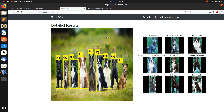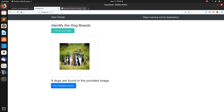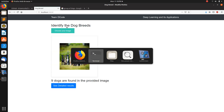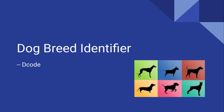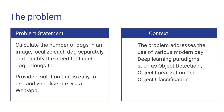This is basically our dog breed identifier model and web app. Now let's move on to the presentation. The problem statement: we are going to calculate the number of dogs present in the image, then localize the dogs — where they are present in the image — and then classify each dog by breed.